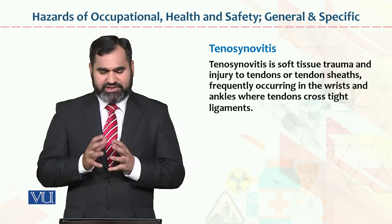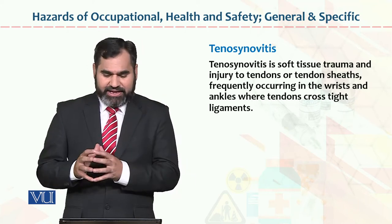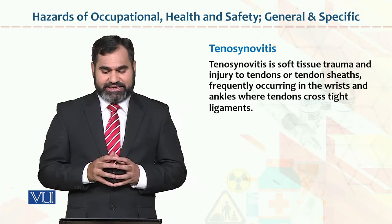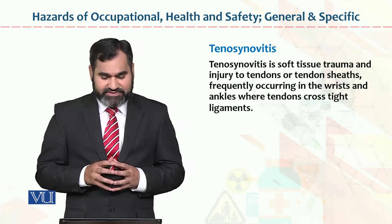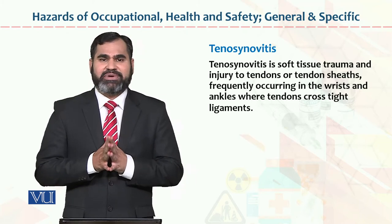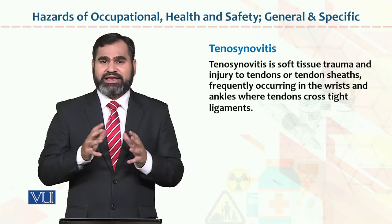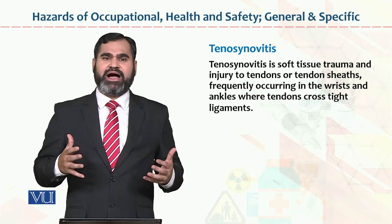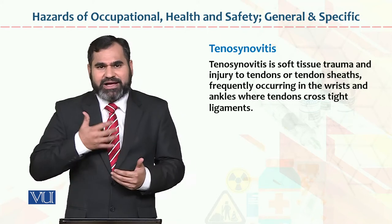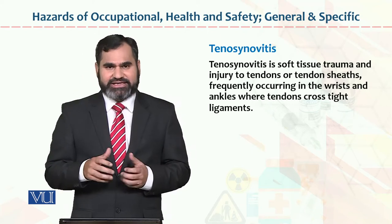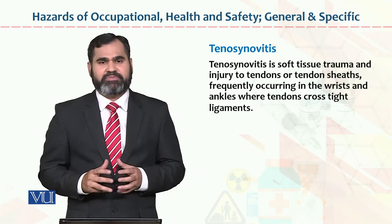Tenosynovitis — यहाँ पे जो term है, इसका मतलब यह है — Tenosynovitis is soft tissue trauma and injury to tendons or tendon sheaths, frequently occurring in the wrist and ankles where tendons cross tight ligaments. Ankle में भी यह problem हो सकती है, घुटने में भी हो सकती है, किसी joints में हो सकती है. यह तब होता है जब आप किसी चीज को care दिए बगैर उसकی movement करते हैं — अचानक hands movement, legs movement, या ankle पर वज़न पड़ जाता है — तो इस वज़ह से यह problem पेश हो सकती है.